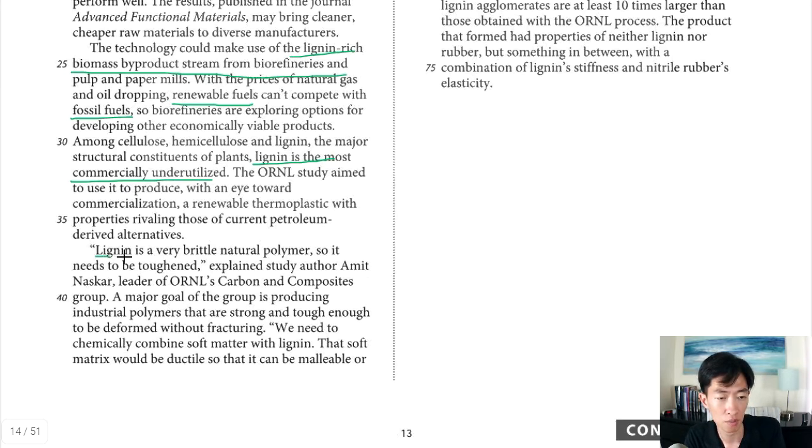In the next paragraph they're going to continue to describe lignin. So it says lignin is a very brittle natural polymer. Brittle means it breaks easily so it needs to be toughened. And that was explained by Amit Naskar. And then they talk about one goal is to have this balance between polymers that are strong and tough enough to be deformed without fracturing. And the way that they do that it says they chemically combine soft matter with lignin. So they're going to talk about that process as we go further.